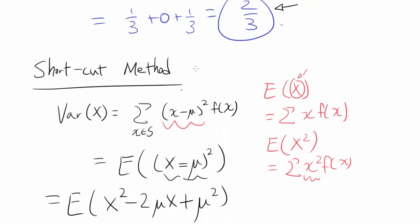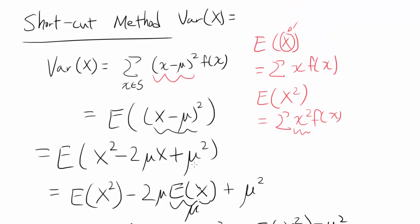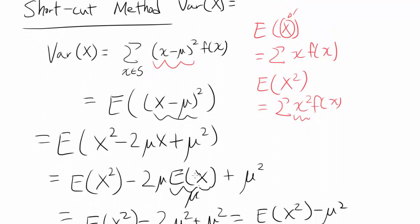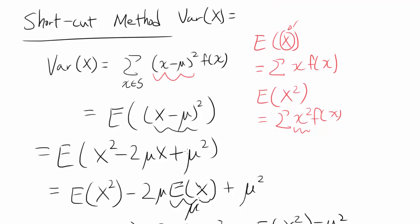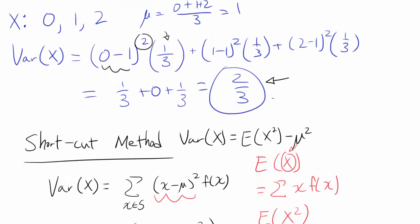So variance of x equals E[x²] minus mu squared. I should specify: this entire video is for discrete random variables, although you can do a similar derivation for continuous ones using integration instead of discrete summation. In our video, we are primarily concerned with discrete random variables, and this is the shortcut formula.